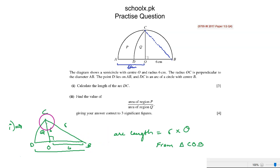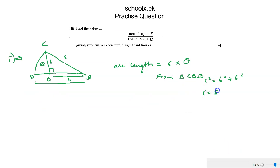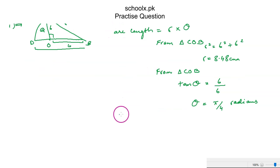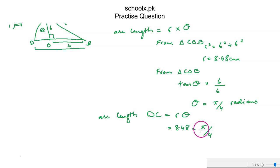R can be found from triangle COB, which is a right-angle triangle. So R squared equals 6 squared plus 6 squared. Computing this, we get R equal to 8.48 cm. Now finding theta — also from the triangle using trigonometry. Tan of theta equals opposite over adjacent, which is 6 over 6. So theta equals tan inverse of 6 over 6, which is pi over 4 radians.